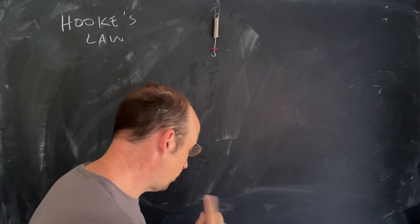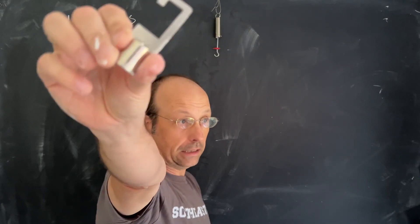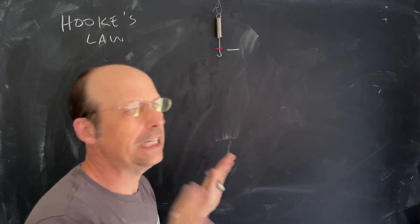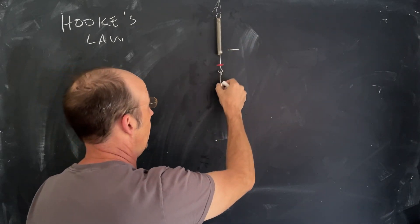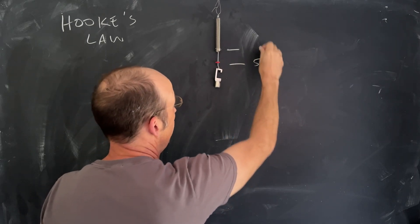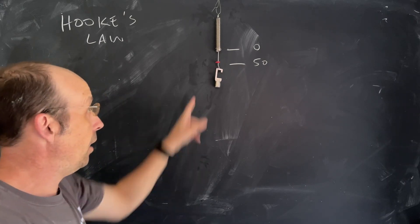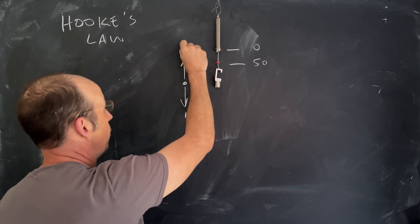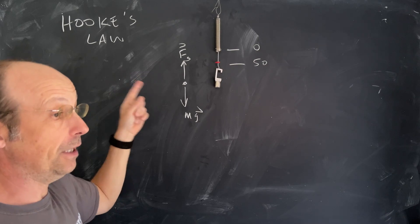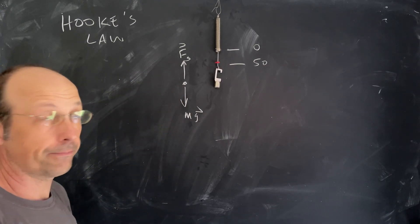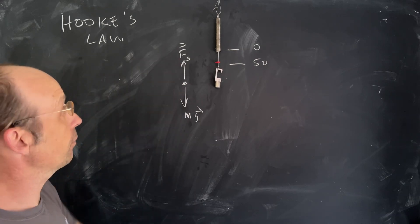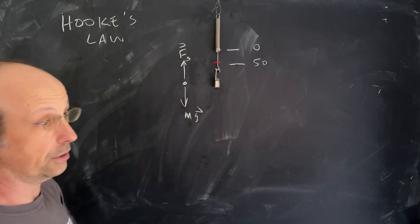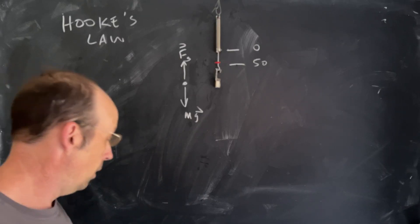I have a 50 gram mass and I'm going to hang it from the spring. I'll mark a little red mark on the position, hang the mass down, and collect data. If I draw a free body diagram for this mass, I have mg pulling down and the spring force pulling up. Since it's at rest, the spring force equals the weight of the mass. By knowing the gravitational force, I know the spring force, and I'm marking the location to get a relationship between force and stretch distance.